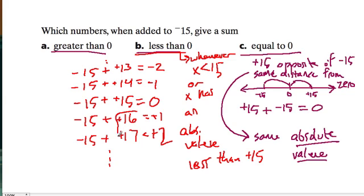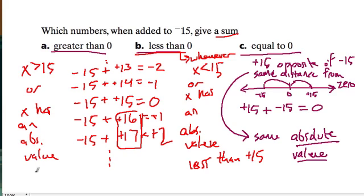So whenever our numbers are bigger than 15, we get positive values, positive sums. Sum means when we add. So if x is bigger than 15, or saying the same thing, x has an absolute value greater than 15.